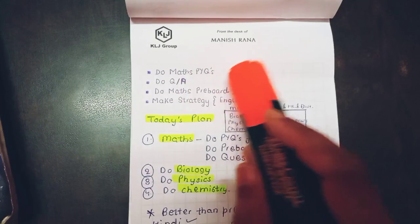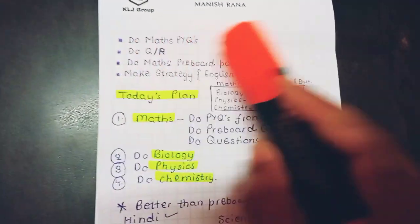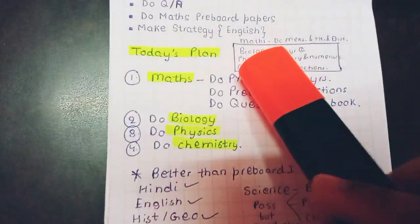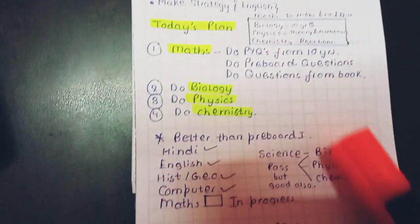Like it's written math previous year questions, question answers, math pre-board papers and then highlight it after you've completed it. Today's plan: biology 10 year questions, physics theory and numericals, chemistry reactions. So this is how you can plan your day.